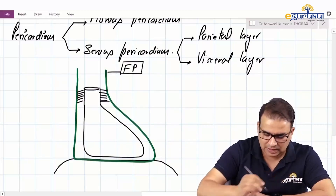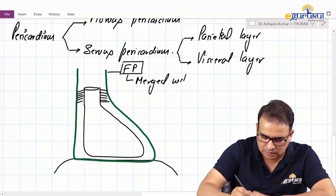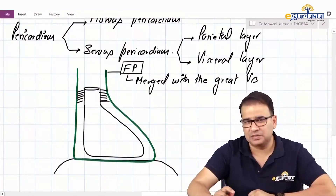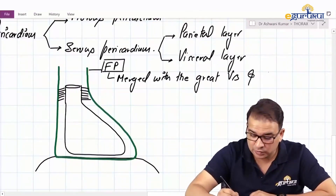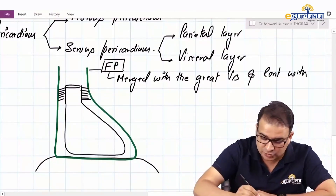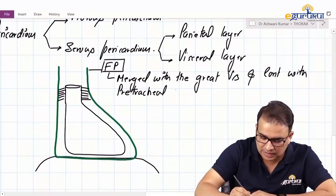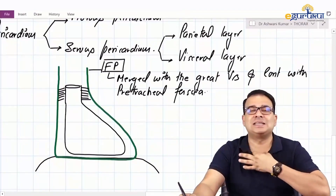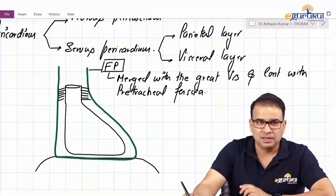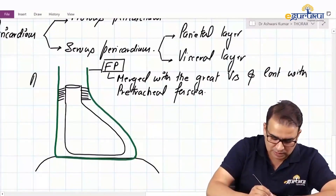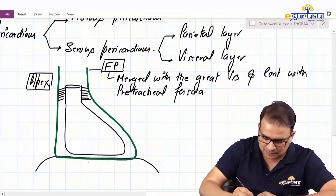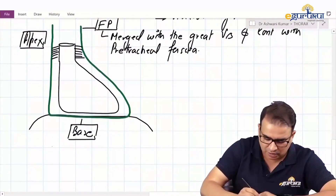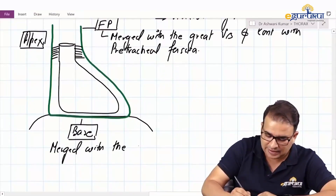That is the fibrous pericardium — a single layer. It is merged with the tunica adventitia of the great vessels, and also continues with the pre-tracheal fascia. We discussed in the head and neck that pre-tracheal fascia extends till the sternal angle, where it merges with the fibrous pericardium — that is the apex. The base of fibrous pericardium is merged with the central tendon of the diaphragm.